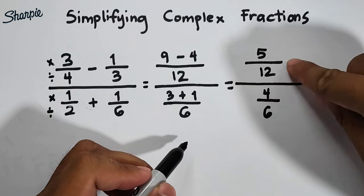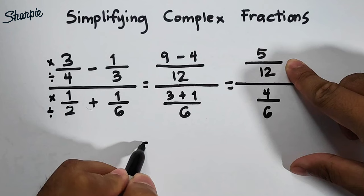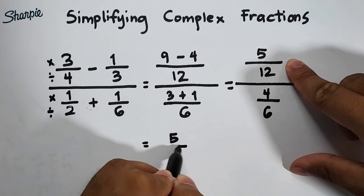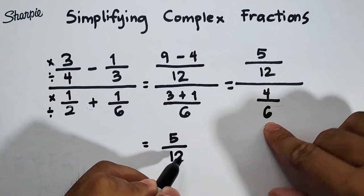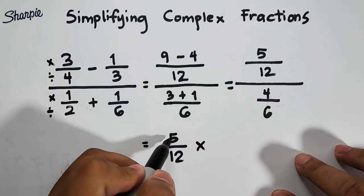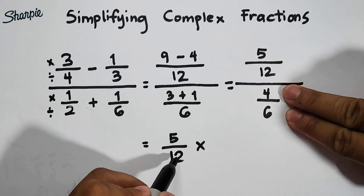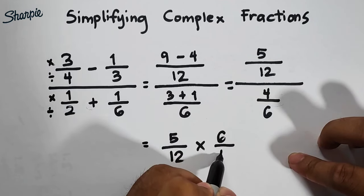So what we need to do here, as you can see, this one is division. So we will copy 5 over 12 over 4 over 6. So what we need to do is we will multiply 5 over 12 by the reciprocal of 4 over 6, which is 6 over 4.